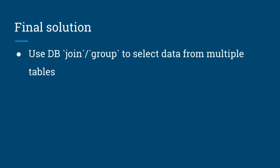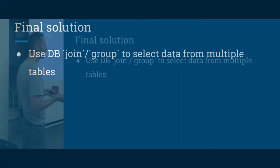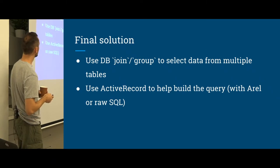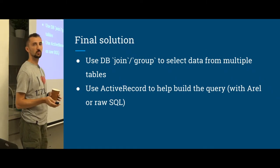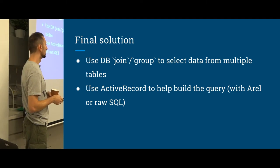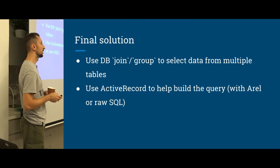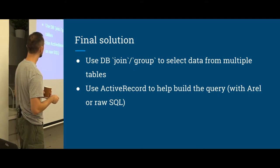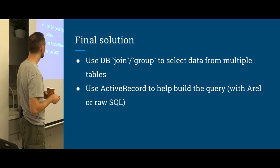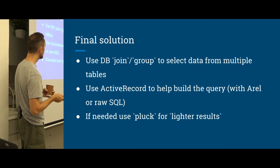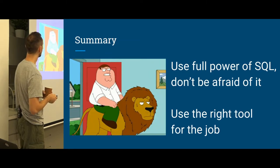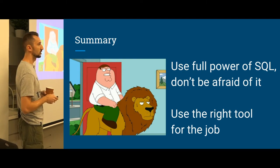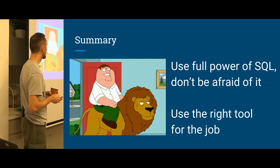Now I can use a very simple interface we're all used to — just do `where`, do `pluck`, and no magical stuff anymore. Our final solution uses the database with joins and group, manipulating data from multiple tables. We use ActiveRecord because it helps us build queries. Yes, we did a lot of raw SQL, but in many cases we just had to specify the aggregation function or the name of the field — the rest was still done by ActiveRecord. We can use Arel or raw SQL, and if needed, we can use `pluck`.